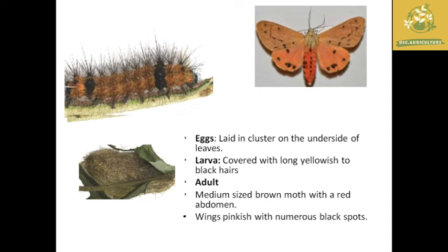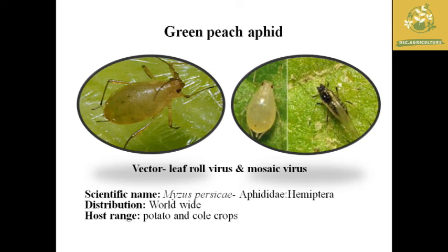The next pest is the green peach aphid. It is a sucking insect that sucks sap but does not cause major direct damage. However, it is listed as an important pest of potato because it acts as a vector of leaf roll virus and mosaic virus in potato, reducing yield and decreasing plant quality. The scientific name is Myzus persicae, under the family Aphididae, order Hemiptera. Its distribution is worldwide and the host range includes potato and cole crops.